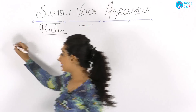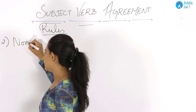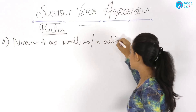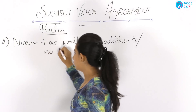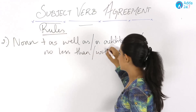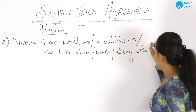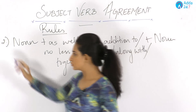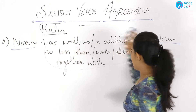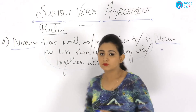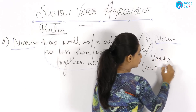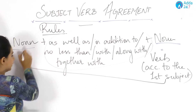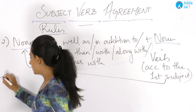The second rule says if two nouns are joined by 'as well as', 'in addition to', 'no less than', 'with', 'along with', or 'together with', the verb should agree according to the first subject — the noun used in the first part of the sentence.